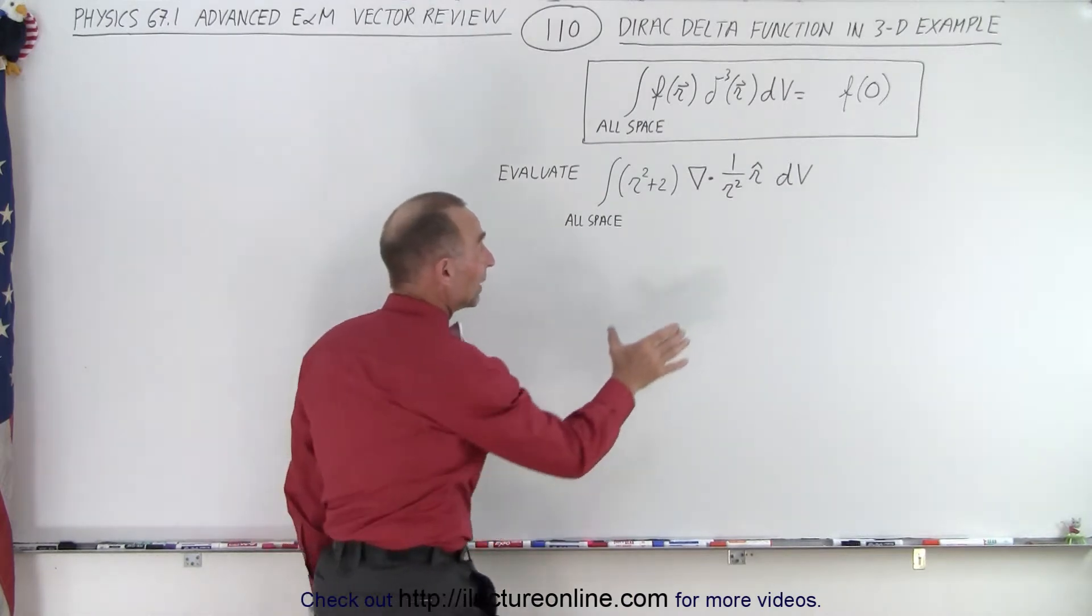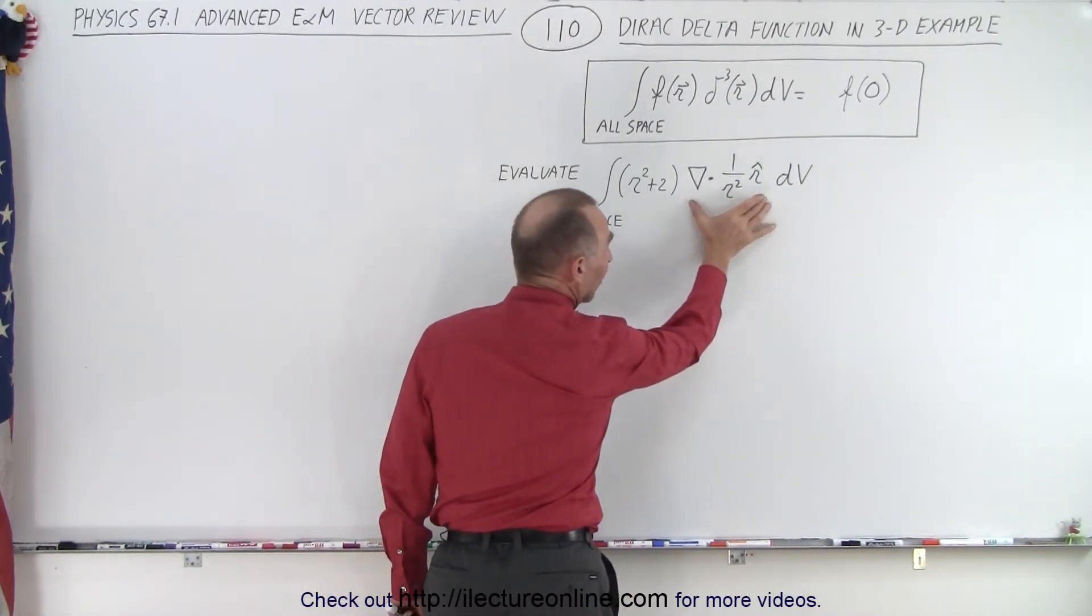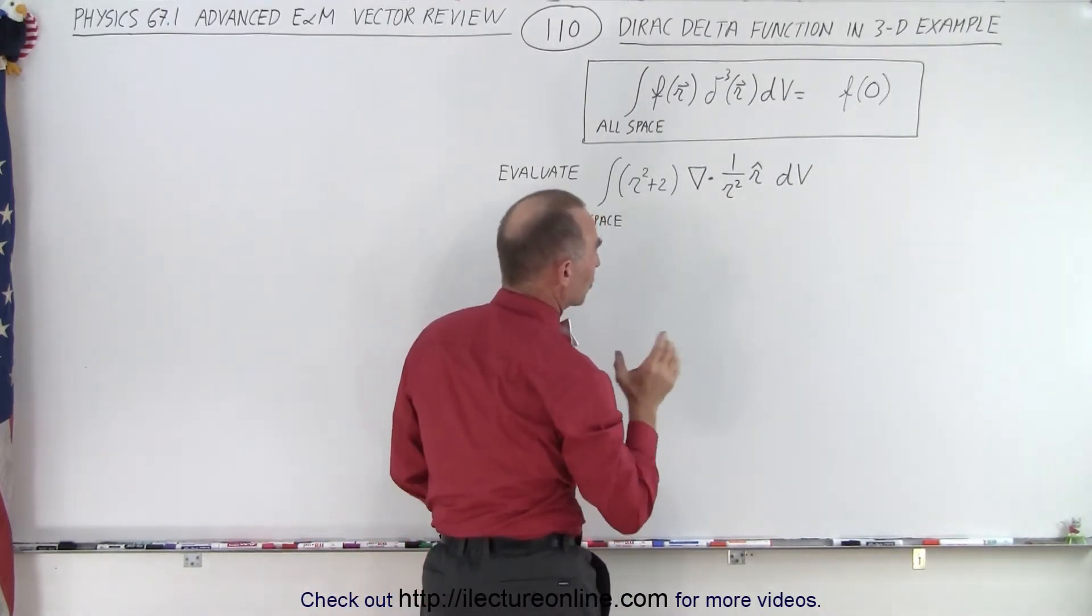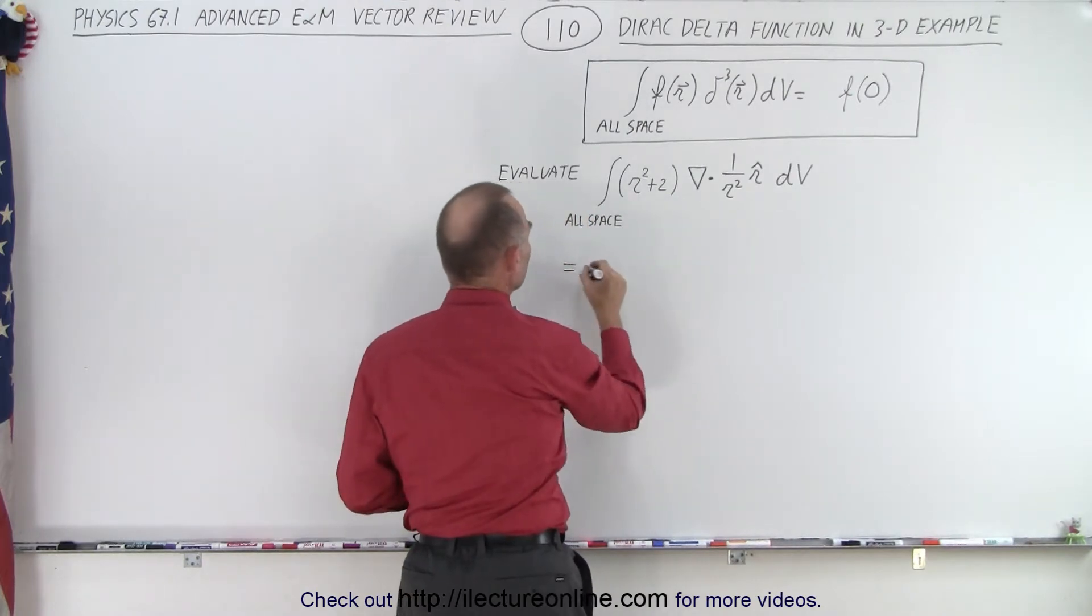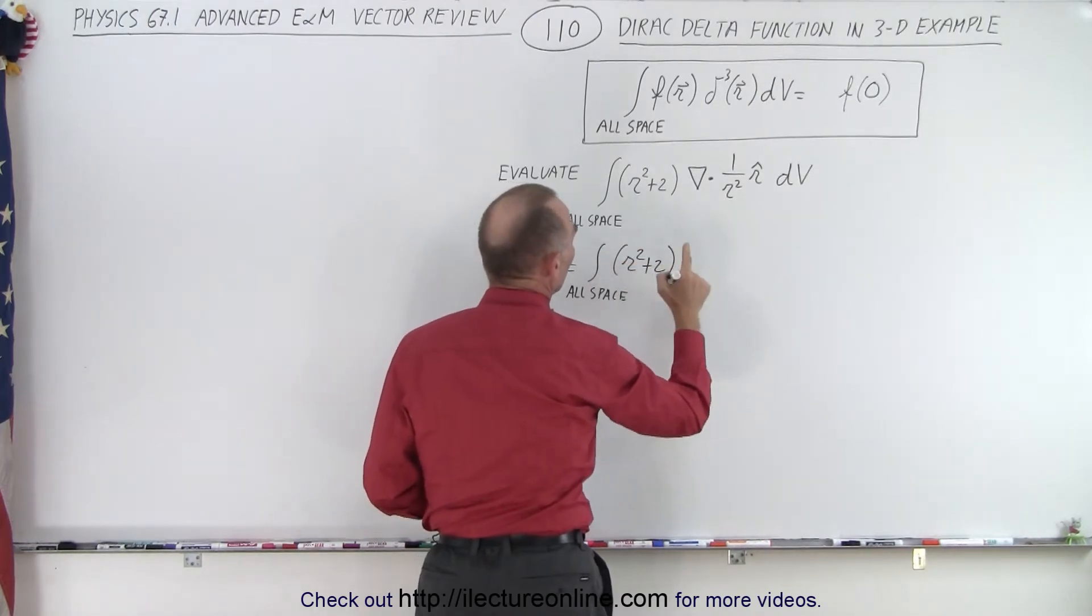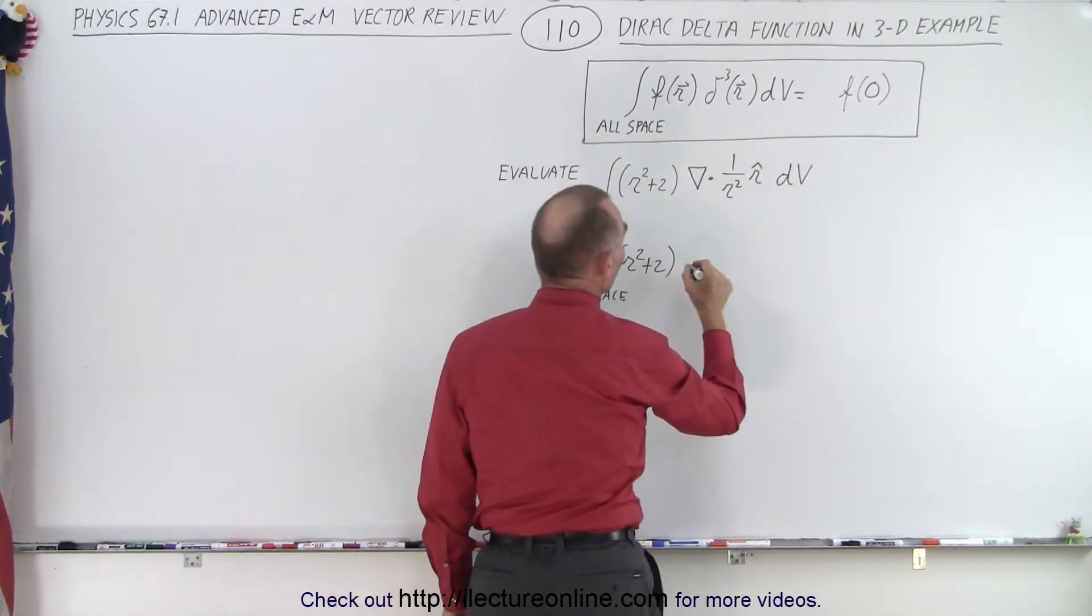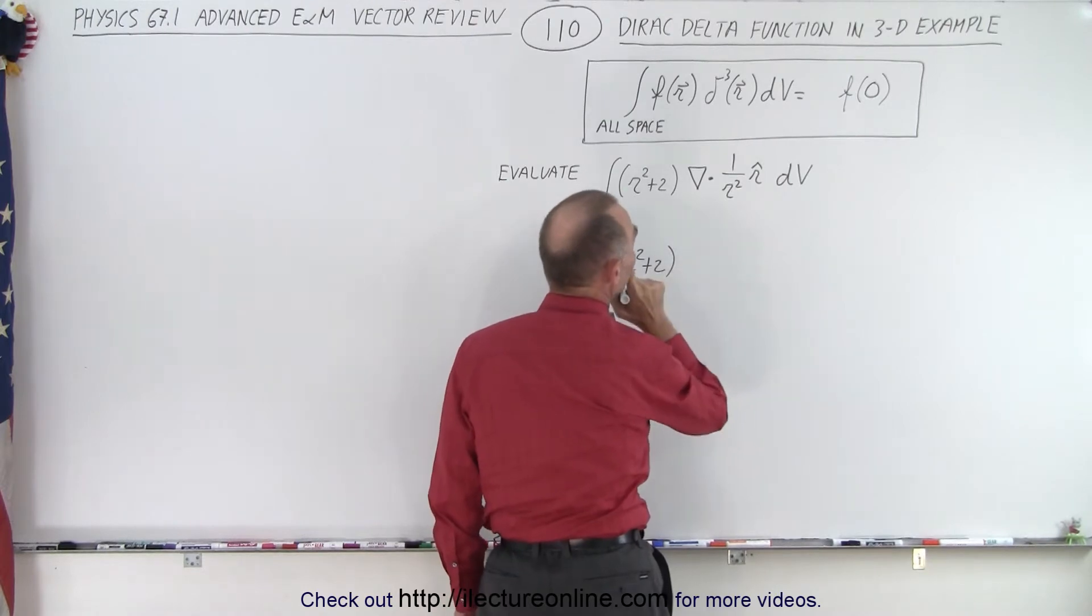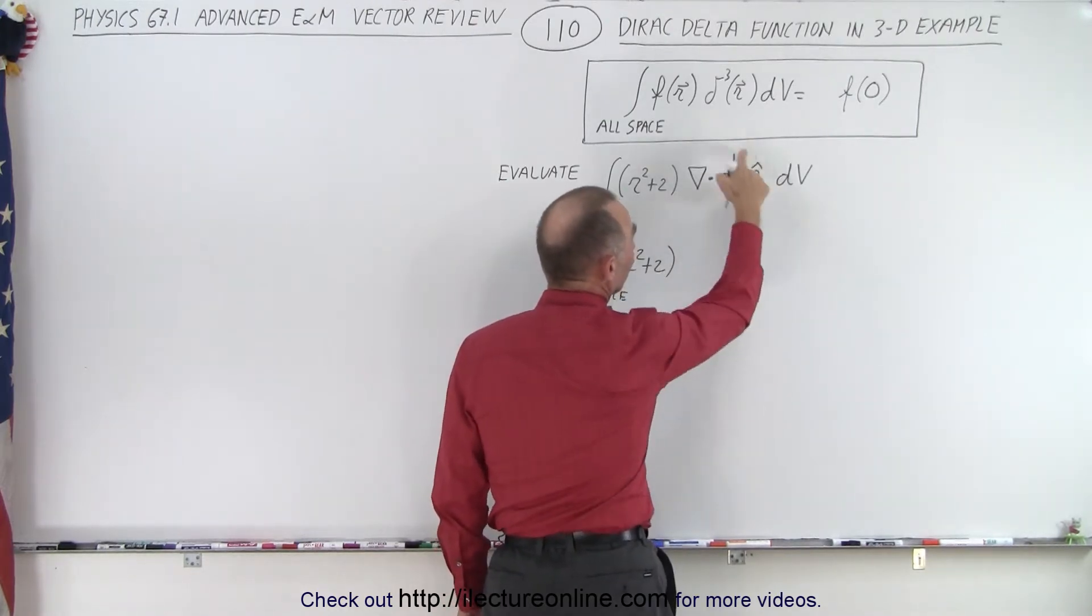Now we have to remember by definition we can replace this by the Dirac delta function in three dimensions. So this can be replaced by integral over all space of the function r square plus 2 multiplied times the Dirac delta function in three dimensions.